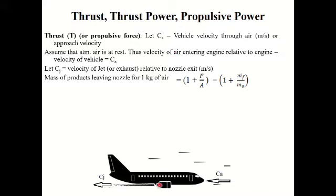After combustion, the products of combustion — that is the exhaust gases, or the mixture of air and fuel — come out from the nozzle. That velocity is Cj. So Cj is the velocity of the jet relative to the nozzle exit.